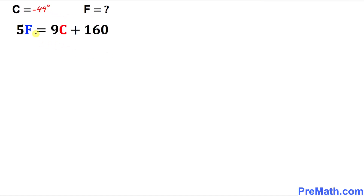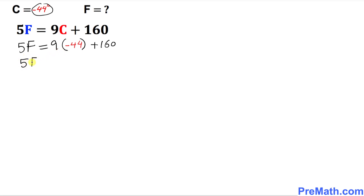Here's our next example. In this case C equals negative 44 degrees and F is unknown. Using the same formula, wherever you see C replace it by negative 44. So 5F equals 9 times negative 44 plus 160. Simplifying: 9 times negative 44 gives negative 396, plus 160 gives negative 236.